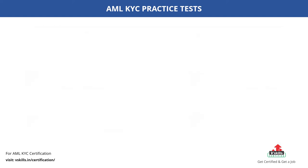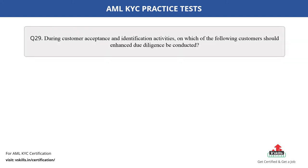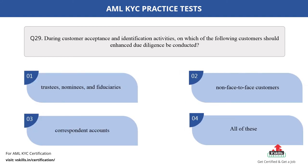Question number 29. During customer acceptance and identification activities, on which of the following customers should enhanced due diligence be conducted? The options are: A. Trustees, nominees and fiduciaries; B. Non-face-to-face customers; C. Correspondent accounts; D. All of these. The correct answer is option D.